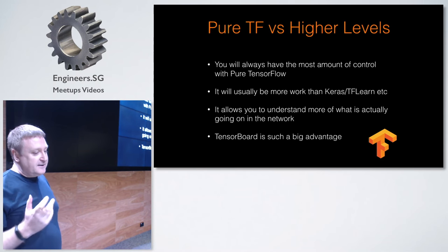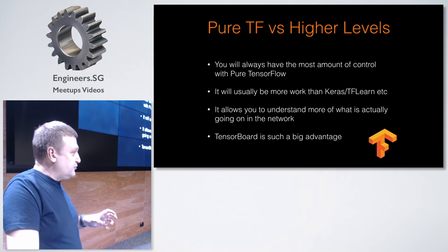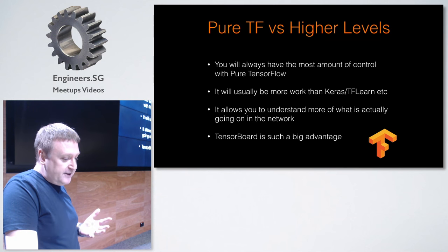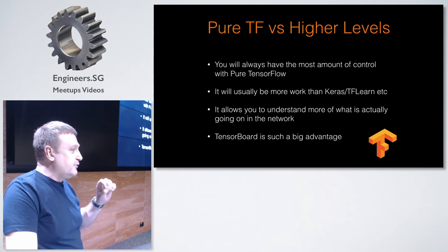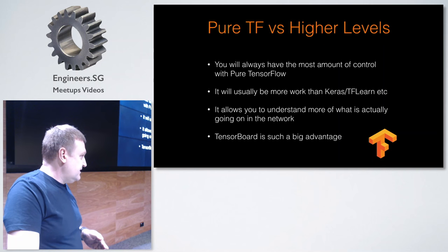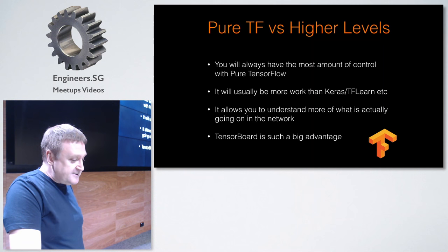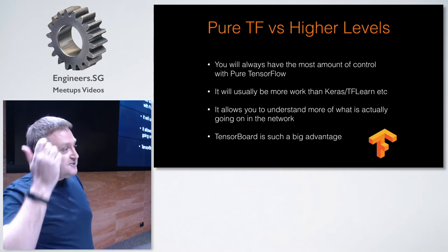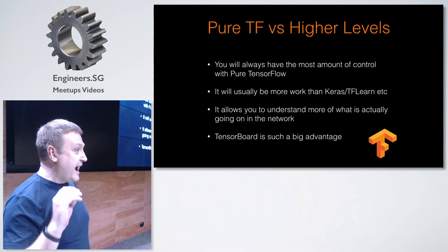I talked about pure TensorFlow versus high-level abstraction APIs. You always have the most control when using pure TensorFlow. While things like Keras are fantastic, they're limited in that you can only build things they've already abstracted. The pure TensorFlow API is a lot more work, but it allows you to actually understand more about what's going on in your network and get a much better sense of how deep learning actually works.